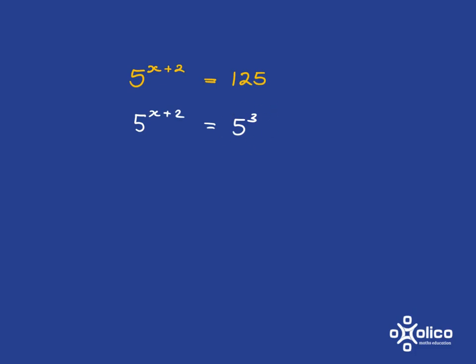Now, what do we have to do to make these two the same? Well, in order for them to be the same, this over here, and let me actually circle it in red, and this must be the same. As soon as those two things are the same, then 5 to the power of it is going to be the same. And so we get that we need x plus 2 to be equal to 3. And that's a very simple equation for us to solve. If x plus 2 is 3, then x must be equal to 1.